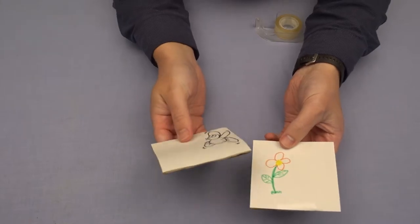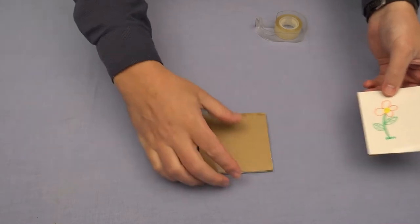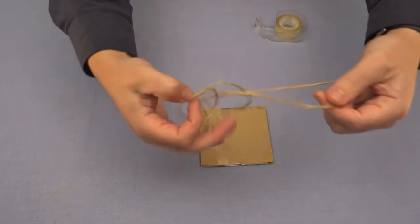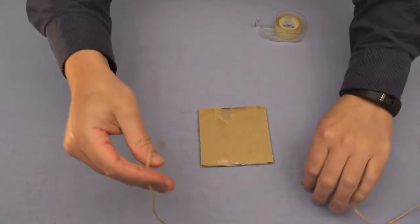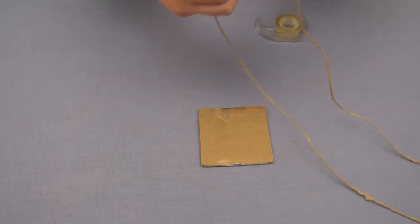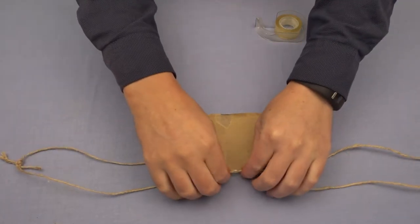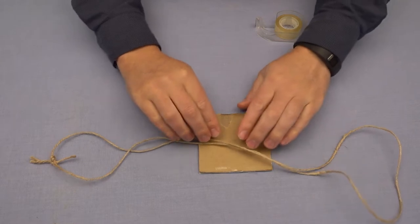Next up we need to decide which one we want to attach the string to. It really doesn't matter here, just choose one of your pieces of cardboard. Then grab your piece of string, you want to get the two ends and tie them together so you've got one big loop. Then you want to find the middle and that is what we're going to stick to the back of our cardboard.